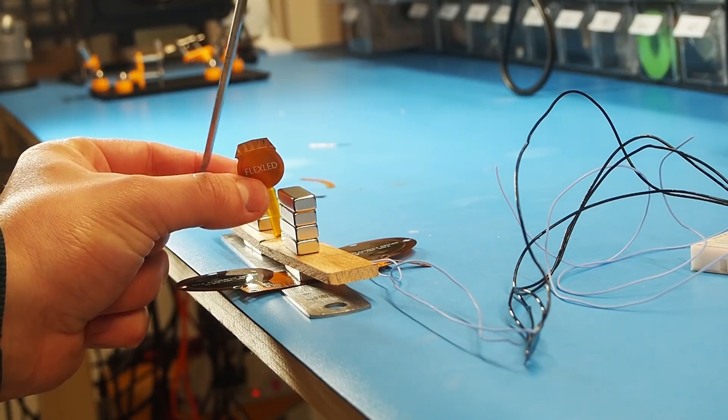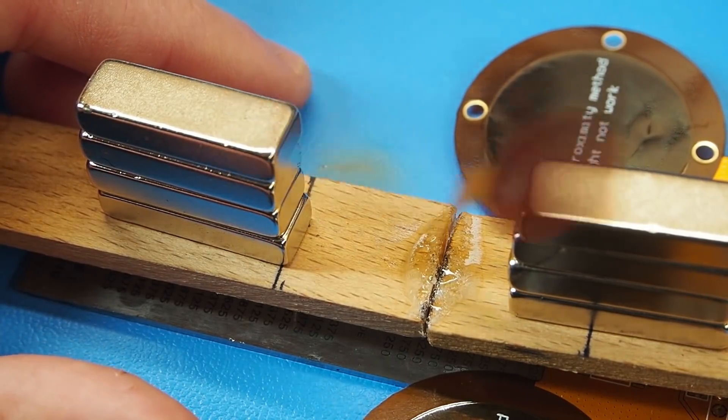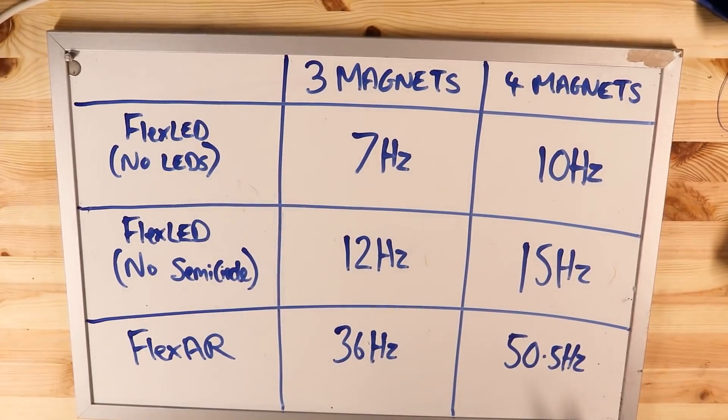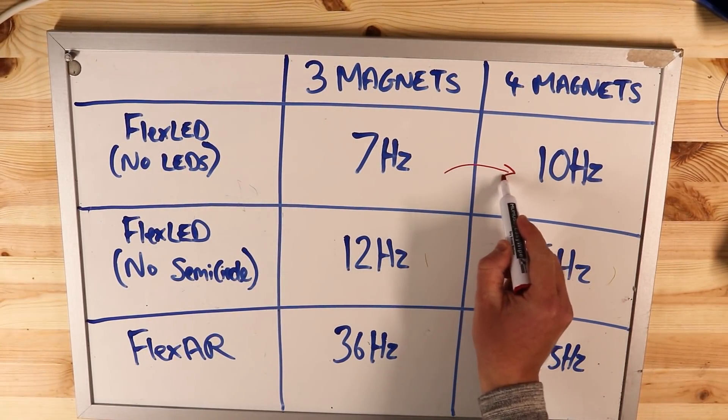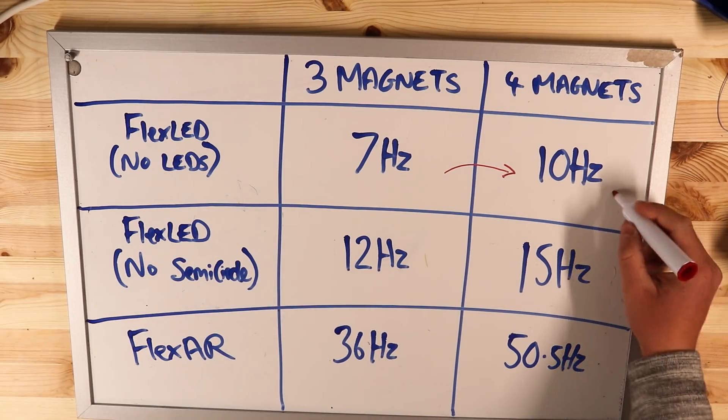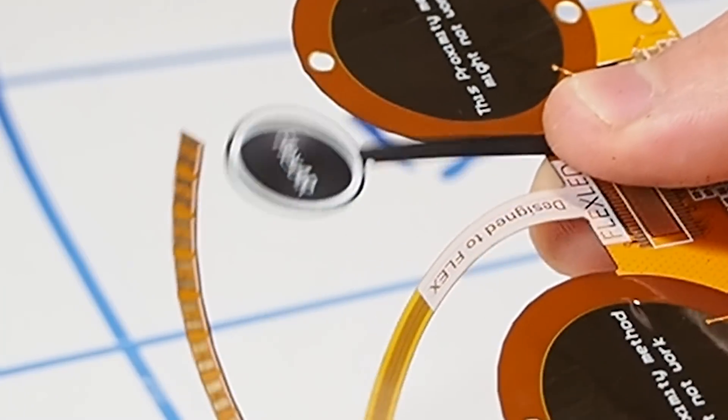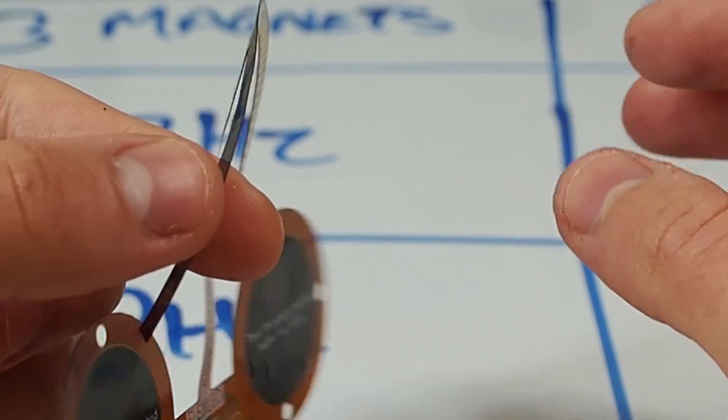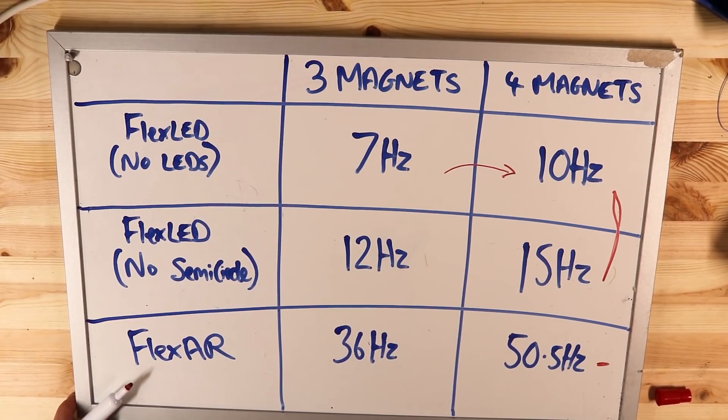I destroyed another PCB in the name of science, and without the semicircle it managed to get to 15 Hz. I summarized all the results in this table, and as we can see the speed increases by decreasing the actuating angle. The reason why I think there is a huge difference between FlexLED and the wooden prototype is because of the wider arm, which makes it stiffer. Both the semicircle and the bottom stiffener make the edge heavier. This means FlexLED has less drag, which makes it easier to move through air.